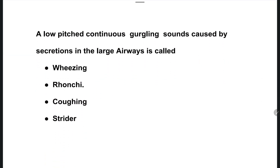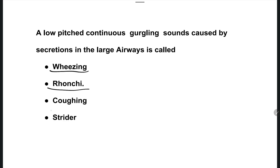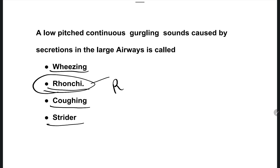The next question: a low-pitched continuous gurgling sound caused by secretions in the large airways is called what? Options are wheezing, ronchi, coughing, or stridor. The right answer is option B — ronchi.